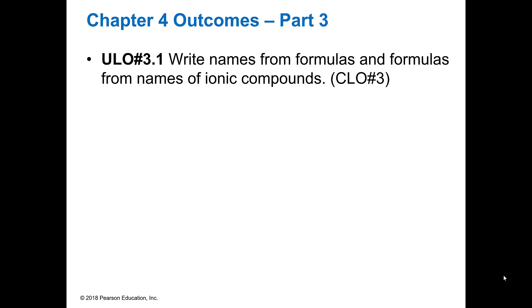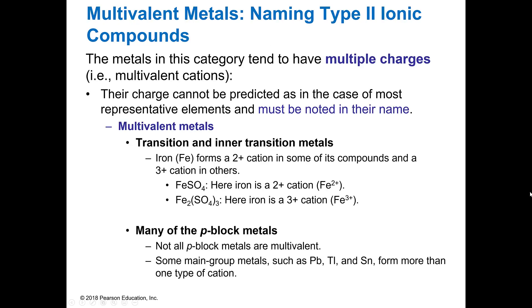But in this one, we're going to look at those transitional metals that don't follow our rules all the time and how we can actually figure out what the charge is on them. So the metals in this category have multiple charges that we call multivalent, which means that the cations can form two or more charges.